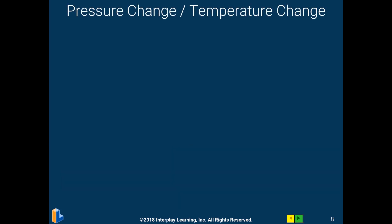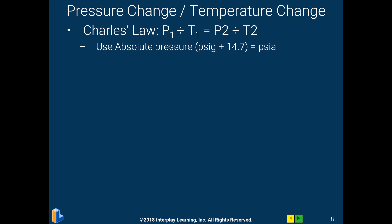I'm going to quickly run through this — we're going to have a supplemental exercise for you to practice this calculation. Charles's Law states: P1 divided by T1 equals P2 divided by T2, where P means pressure and T means temperature. P1 and T1 are the pressure and temperature at one point in time, and P2 and T2 are at another point in time. The calculation gets a little tricky because we have to use absolute pressures and Rankine temperatures.